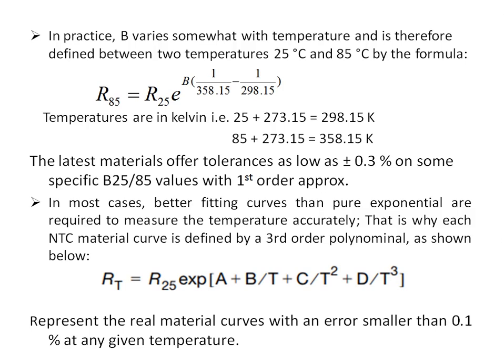In practice, B does not remain constant; it varies with temperature. Generally, resistance versus temperature is defined between two temperatures — typically 25°C and 85°C — where 25°C is the base temperature of the thermistor. Other common pairs are 25/50, 25/80, or 25/100. The latest materials offer tolerances as tight as plus or minus 0.3%. The above equation is a first-order approximation of the resistance versus temperature relationship.